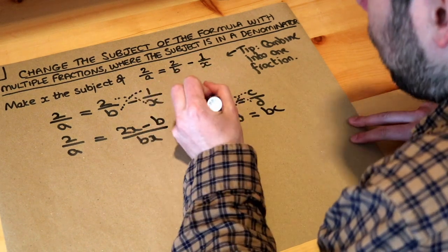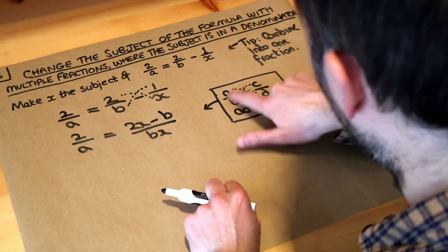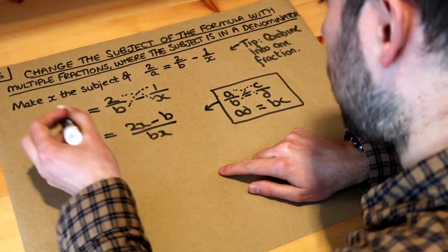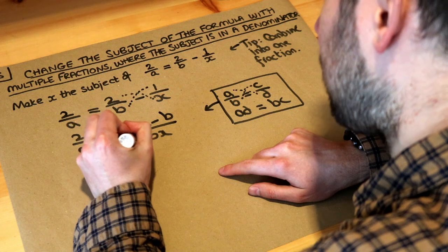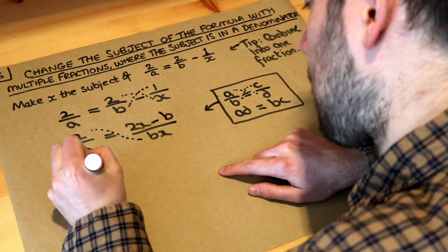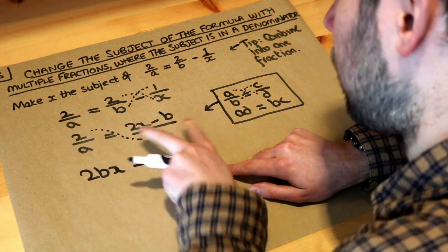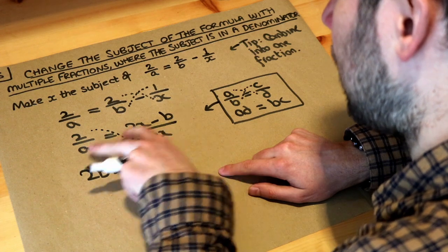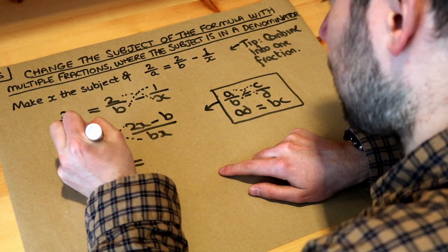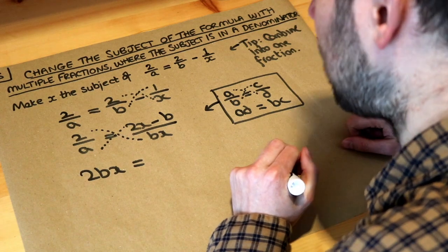So that's a different kind of cross multiplication trick. So we apply that here. We do the 2 times the bx, which is 2bx, and that's equal to the 2x minus b multiplied by the a. So we get this cross in the middle, hence why it's called cross multiplication.